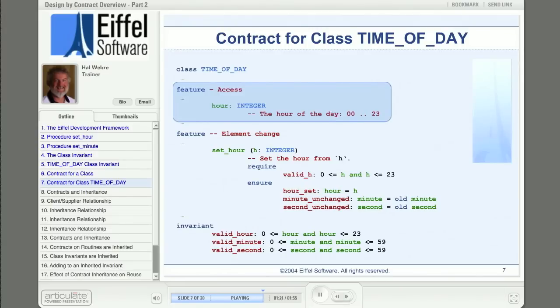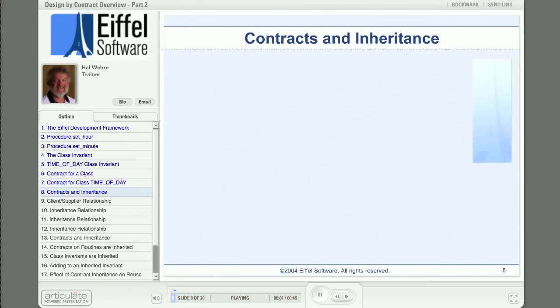In addition to the queries like hour in the class contract for TIME_OF_DAY, we also see the contracts for each procedure that's available to clients. So here's the contract for set_hour. And last, we see the class invariant, the statement defining the validity of TIME_OF_DAY instances. So that's the contract for a class. When you view the Eiffel Studio presentation, you'll see how Eiffel Studio makes this type of view available to you quite easily for any class. And that makes sense, because as a reuse consumer, you're always interested first in the specification or contract of a class. That is, what the class can do for you.